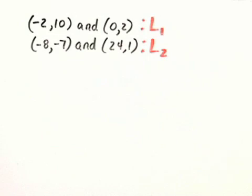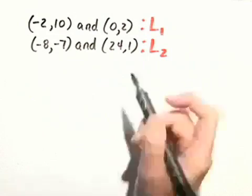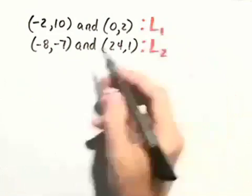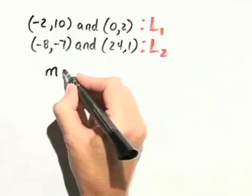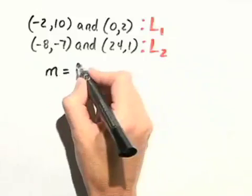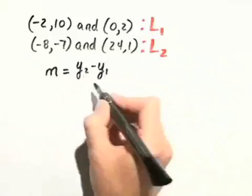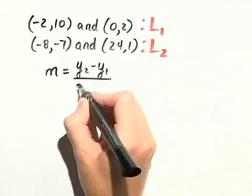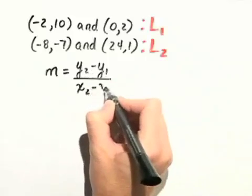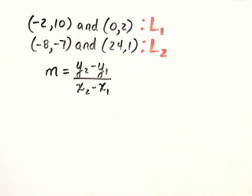So let's first of all find the slope of line 1. We have the general slope formula: m equals the difference of the y-coordinates, y sub 2 minus y sub 1, over the difference of the x-coordinates, x sub 2 minus x sub 1.